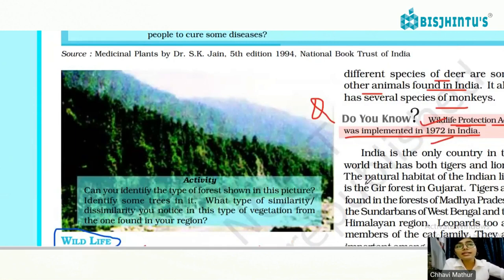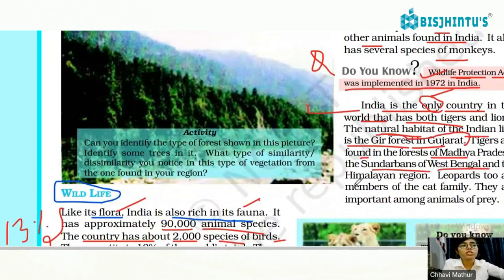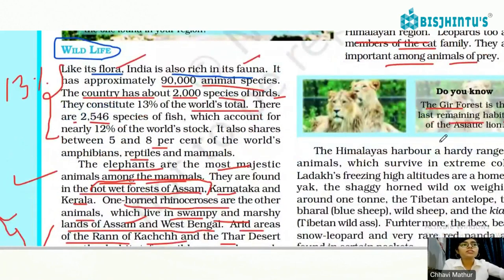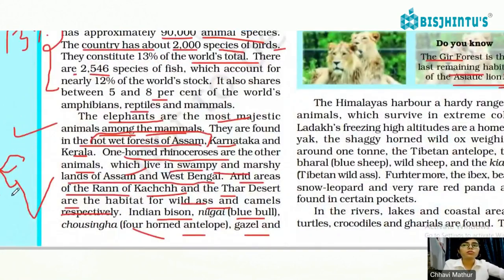India is the only country in the world that has both tigers and lions. The natural habitat of the Indian lion is the Gir Forest in Gujarat. Tigers are found in the forests of Madhya Pradesh, the Sundarbans of West Bengal, and the Himalayan region. Leopards too are members of the cat family and are important animals of prey. The Gir Forest is the last remaining habitat of the Asiatic lions.